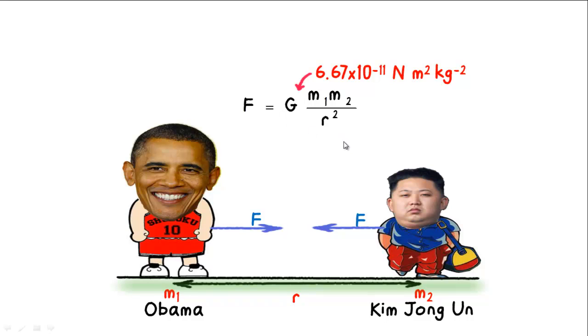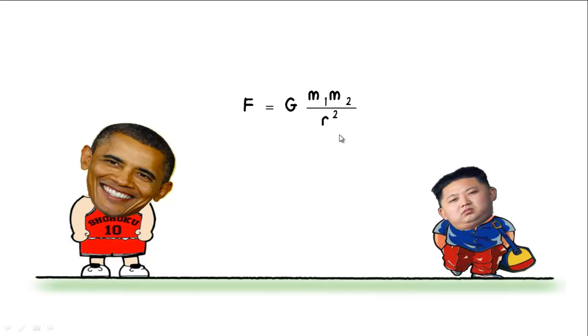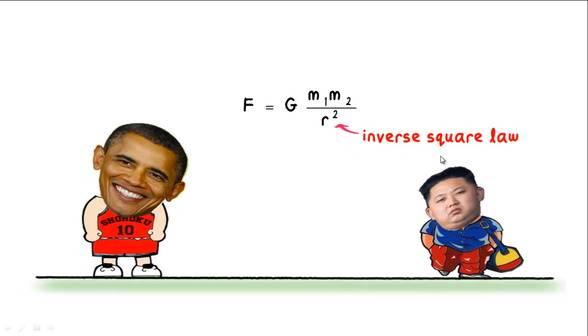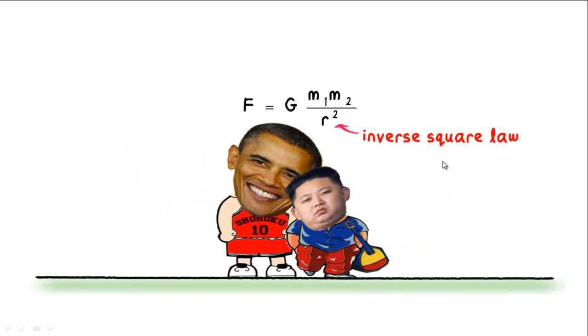But wait a minute, what about the denominator? Newton's law of gravitation is an example of the inverse square law, which means that the nearer the two masses are, the stronger the gravitational pull. So what if we place them so close that they are touching?